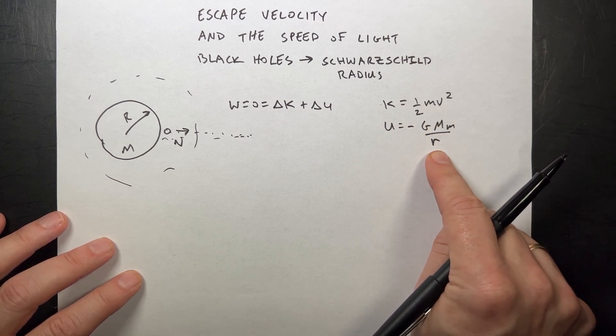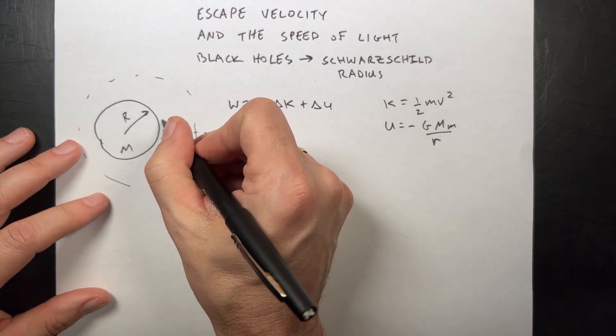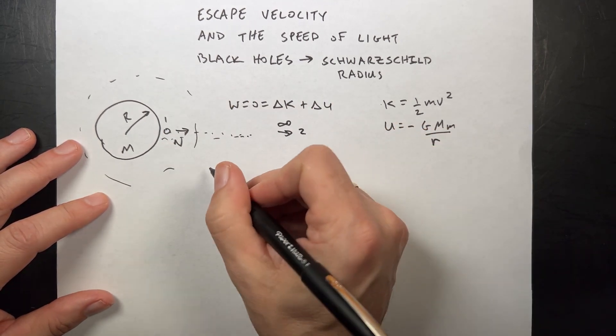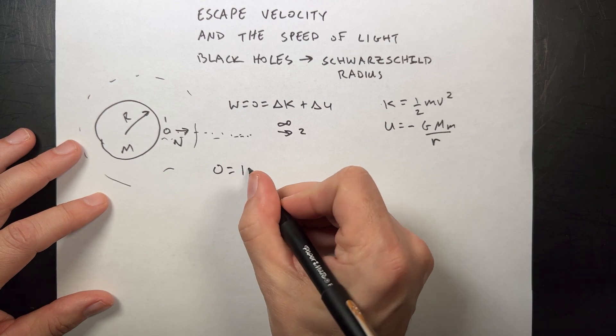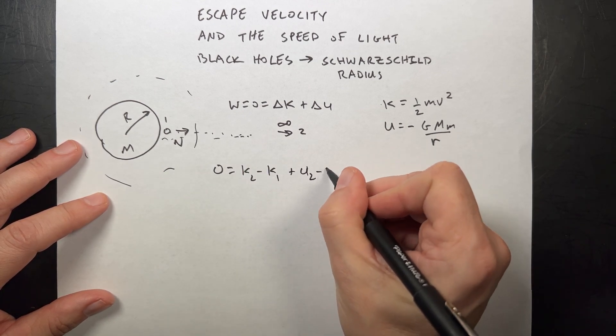Kinetic energy is one-half mv squared. Potential is negative G, mass of the Earth, mass over r. So if I go from here, position one, to an infinite distance away at position two, I can say zero is K2 minus K1 plus U2 minus U1.